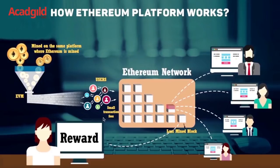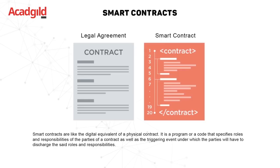A smart contract is a pre-written logic stored and replicated on blockchain. This logic is executed and run by a network of computers running the blockchain. Ethereum aims to create a censorship-resistant, hack-proof, decentralized network.